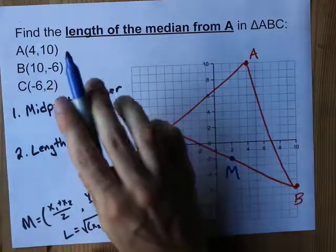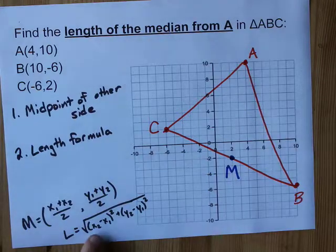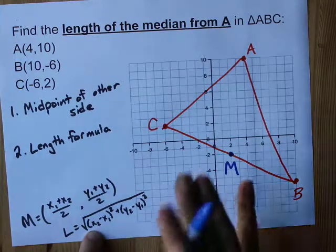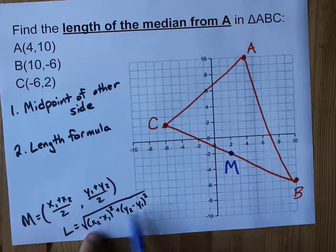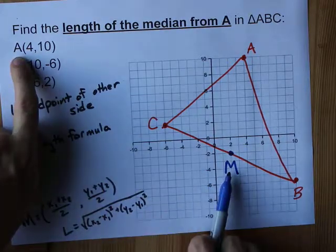Our job is to find the length from M to A, and we have a length formula for that. Just don't get confused. The x1 and x2 and y1 and y2 here are for A and M, the midpoint.